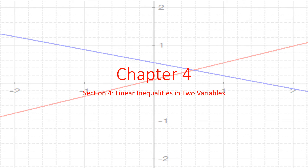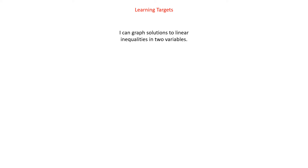Welcome back to Chapter 4. Today we're going to be looking at Section 4, which is not actually on systems at all. Sections 4 and 5 are going to be on linear inequalities. This one is just on linear inequalities by themselves, so we're going to see how to graph them and what they mean. Our learning target is: I can graph solutions to linear inequalities in two variables.